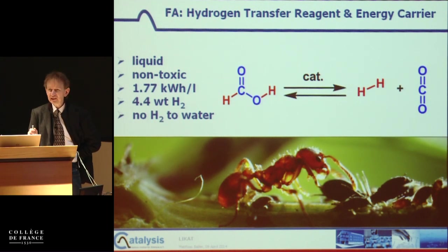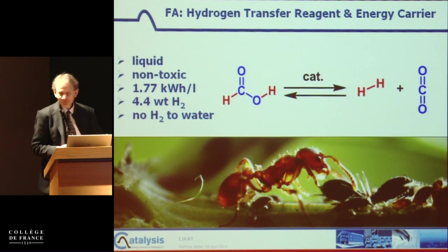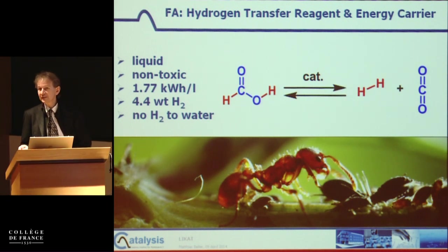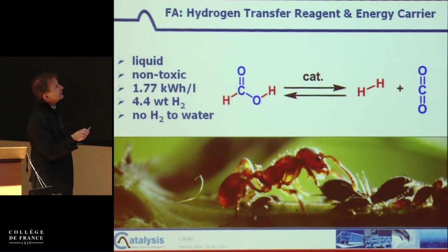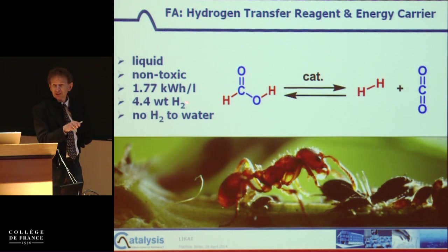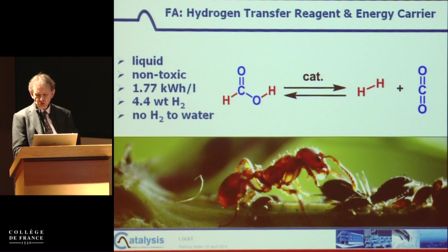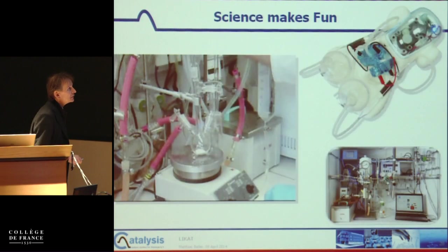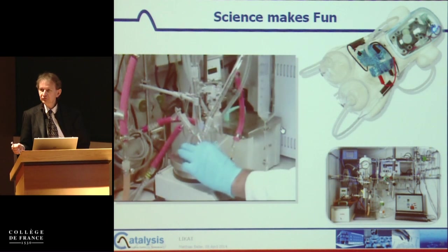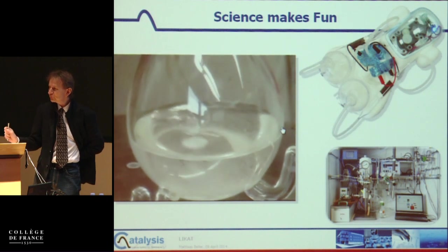Formic acid is a liquid, which is better — you can transport it more easily than gaseous energy carriers. It is non-toxic — this is often misunderstood; formic acid is corrosive but non-toxic. It has a low energy density compared to methanol, but this process is fairly energy neutral so the inherent efficiency is relatively high. The key point is that formic acid is the only organic compound where you can generate hydrogen and electricity directly at room temperature.